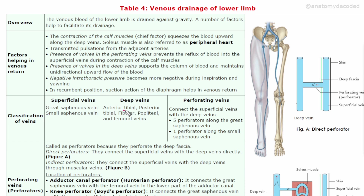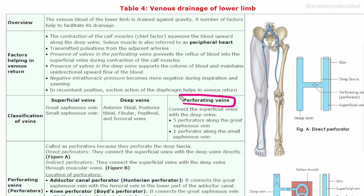The deep veins include the anterior tibial vein, posterior tibial vein, fibular vein, popliteal vein, and femoral vein. Veins which connect the superficial and deep veins are referred to as perforating veins. There are five perforators along the great saphenous vein and one perforator along the small saphenous vein.